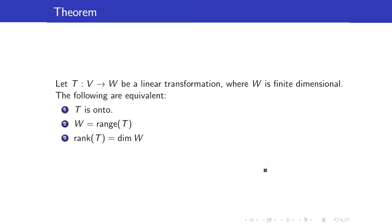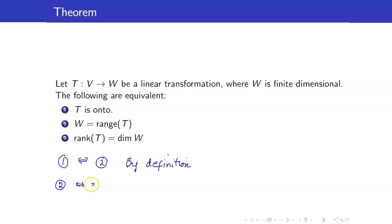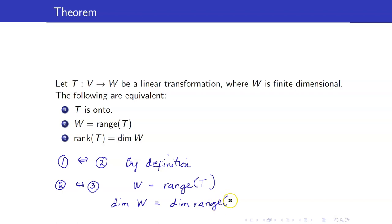Here is a characterization for a linear transformation to be onto. The equivalence of conditions 1 and 2 follows by definition. For the equivalence of 2 and 3: if the dimension of W equals the dimension of the range of T, then since the dimension of the range is the rank of T, we get that the rank of T equals the dimension of W.